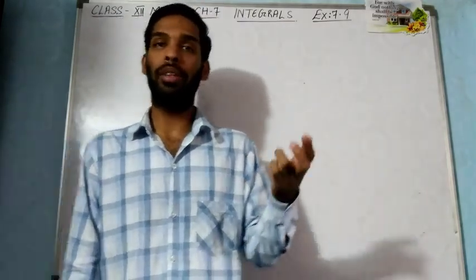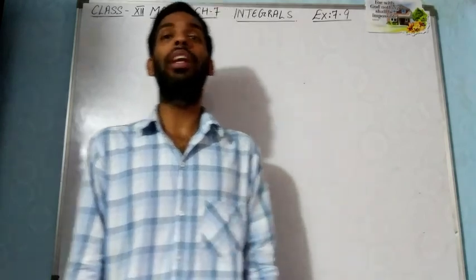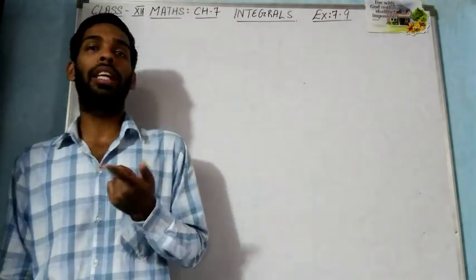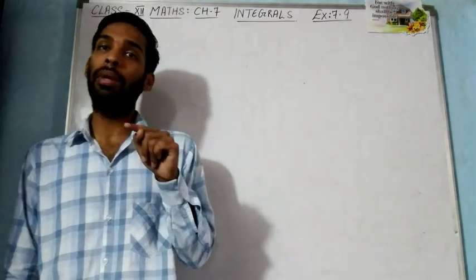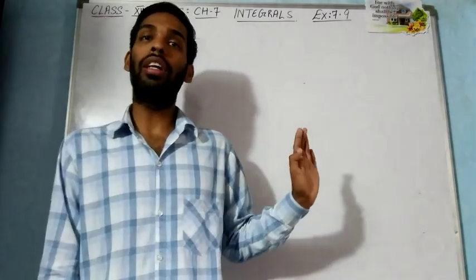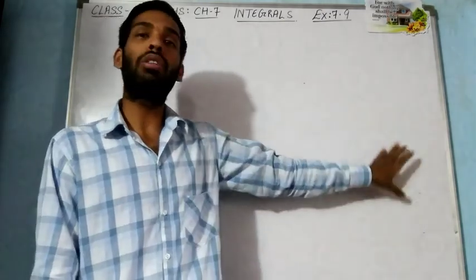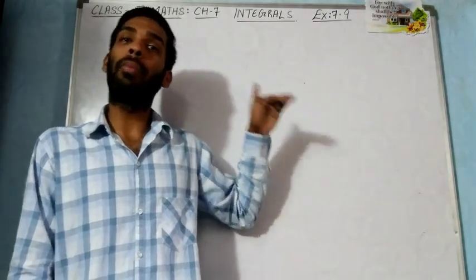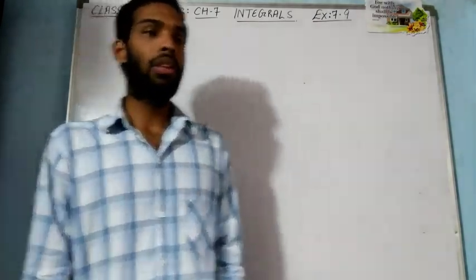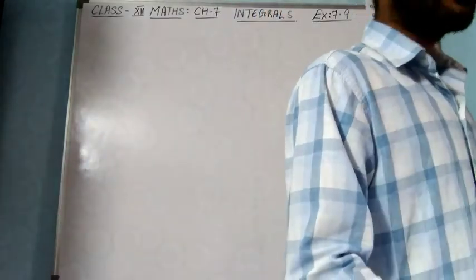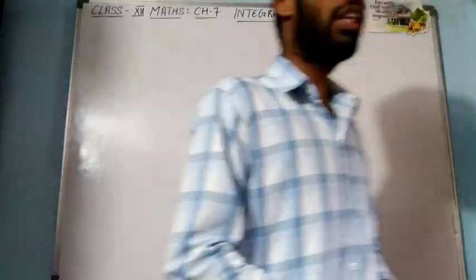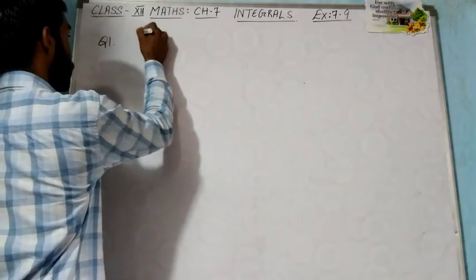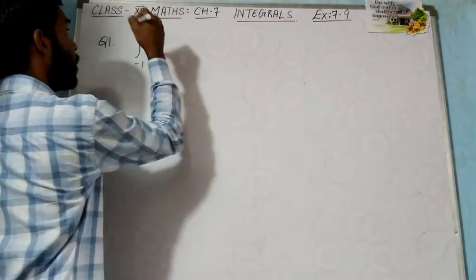Exercises 7.1 to 7.7 covered indefinite integrals where no limits are given. Now we start with definite integrals where limits will be given. As I mentioned at the beginning, the difference between indefinite and definite integrals is that in indefinite integrals there is a constant of integration plus C, but in definite integrals there is no plus C because limits are given. Let us start question number 1 of exercise 7.9.